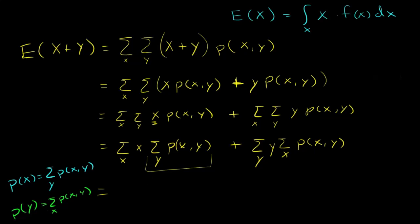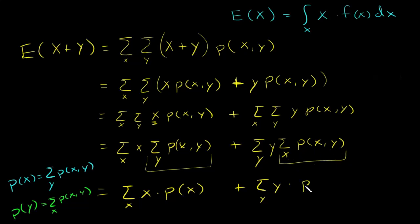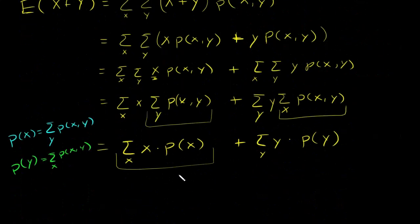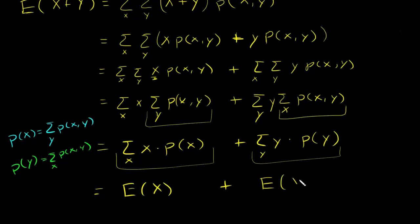So this equals the sum over x of x times the marginal probability mass function of x, plus the sum over y of y times the marginal probability mass function of y. This first piece is exactly the expected value of x, and the second piece is the expected value of y. So we've shown that the expected value of x plus y equals the expected value of x plus the expected value of y.